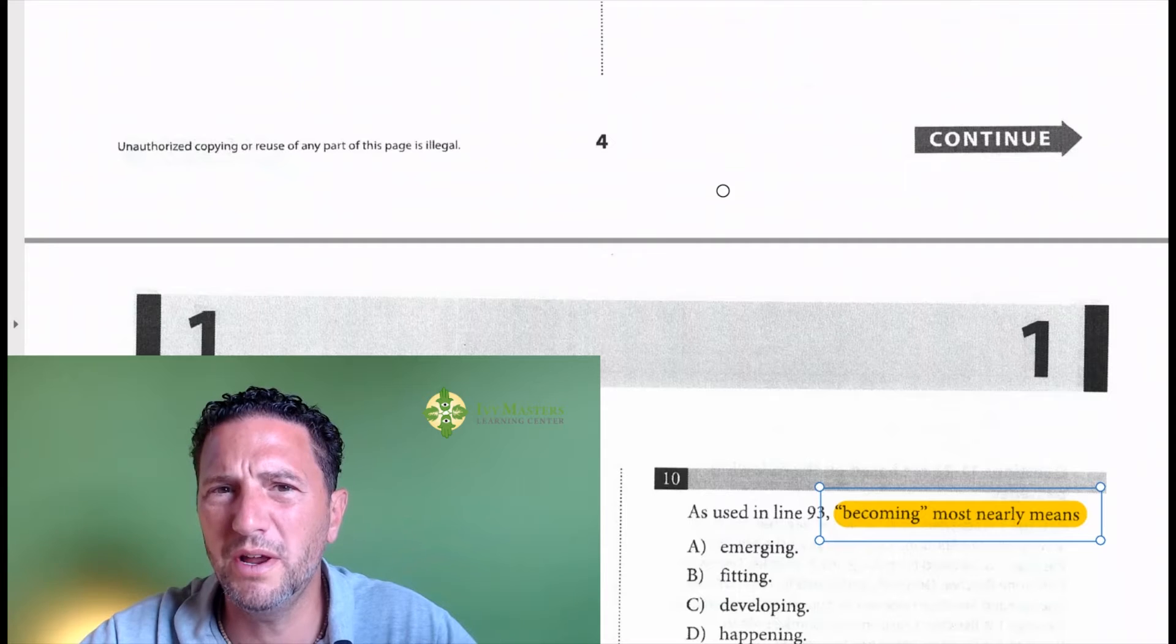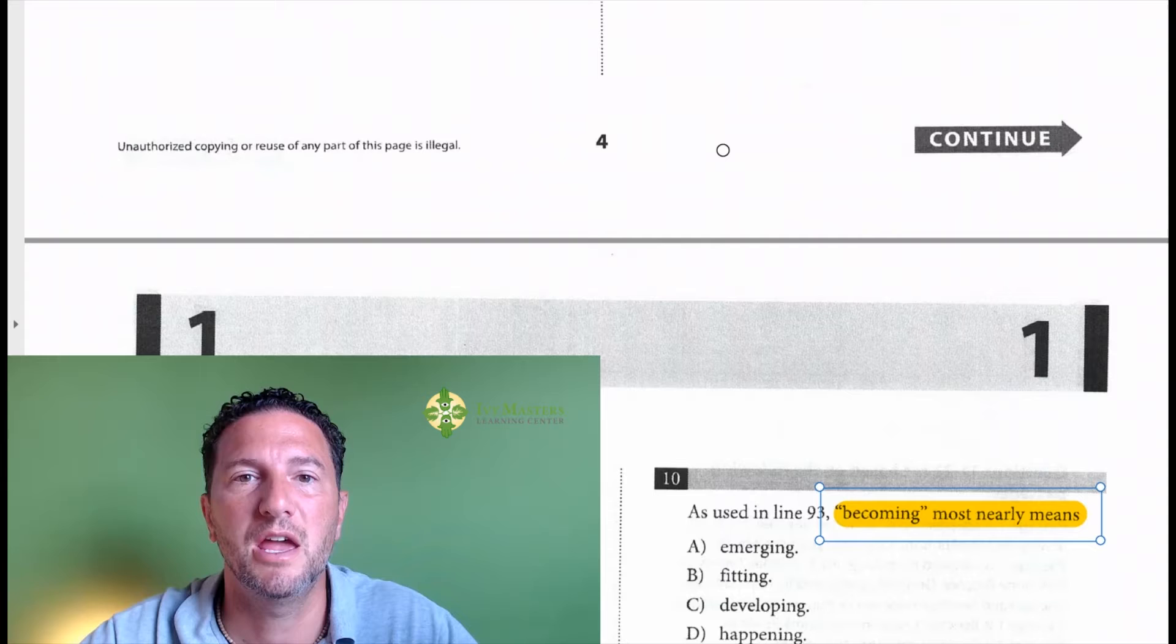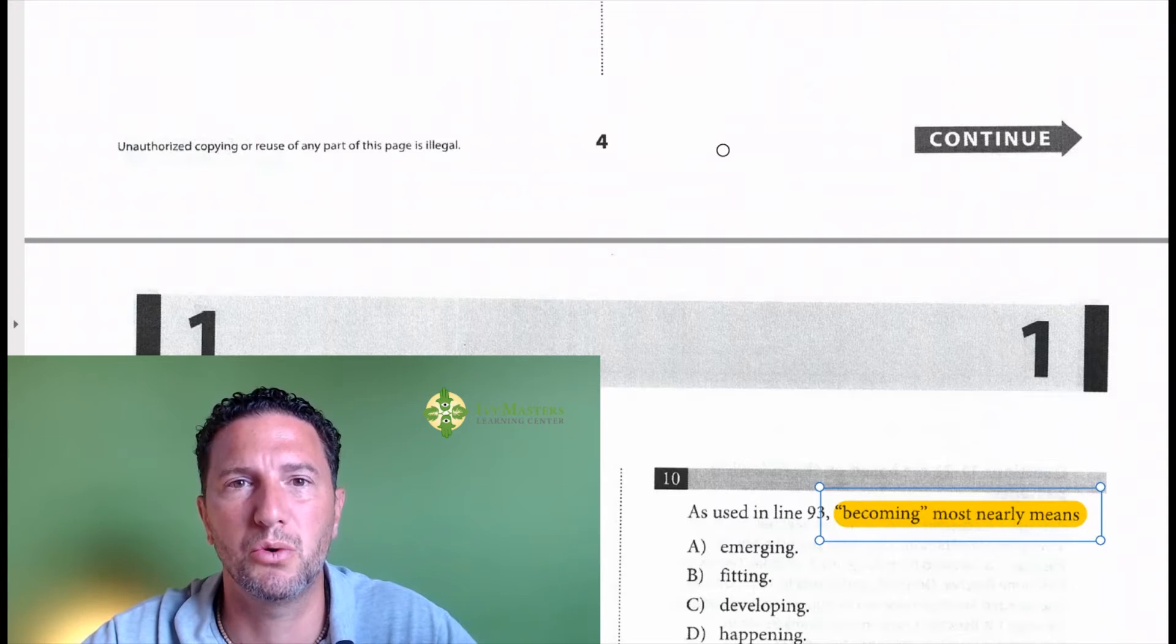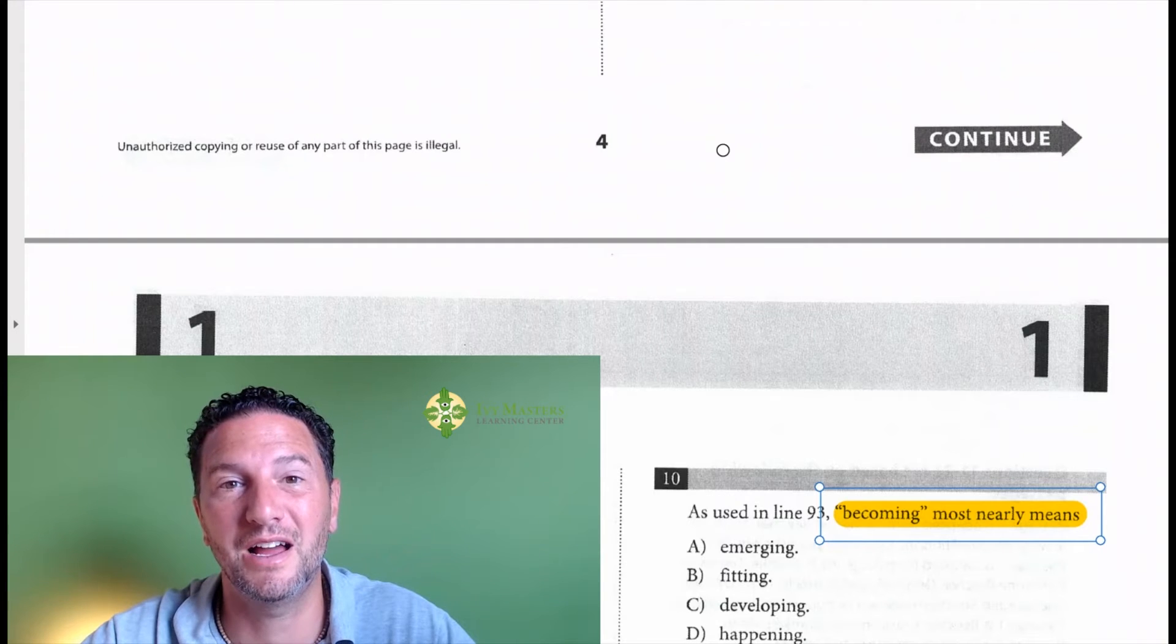So what you want to do for this one, just like with the book example or the record example, let's say it was like hey, what part of speech is book or what part of speech is record? You don't want to just say oh book is a noun or book is a verb. You've got to read the context in order to figure it out. Same idea here.